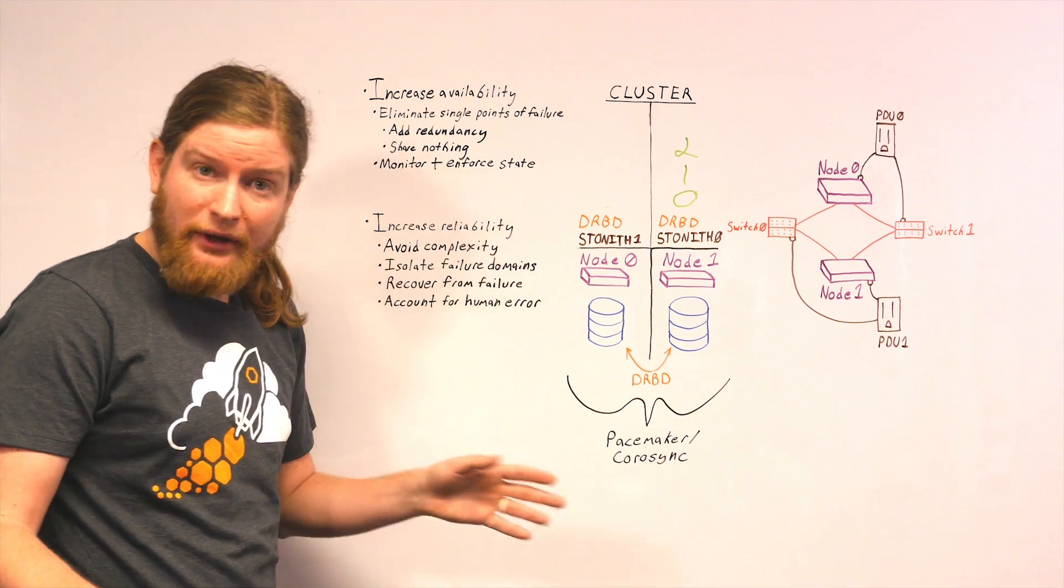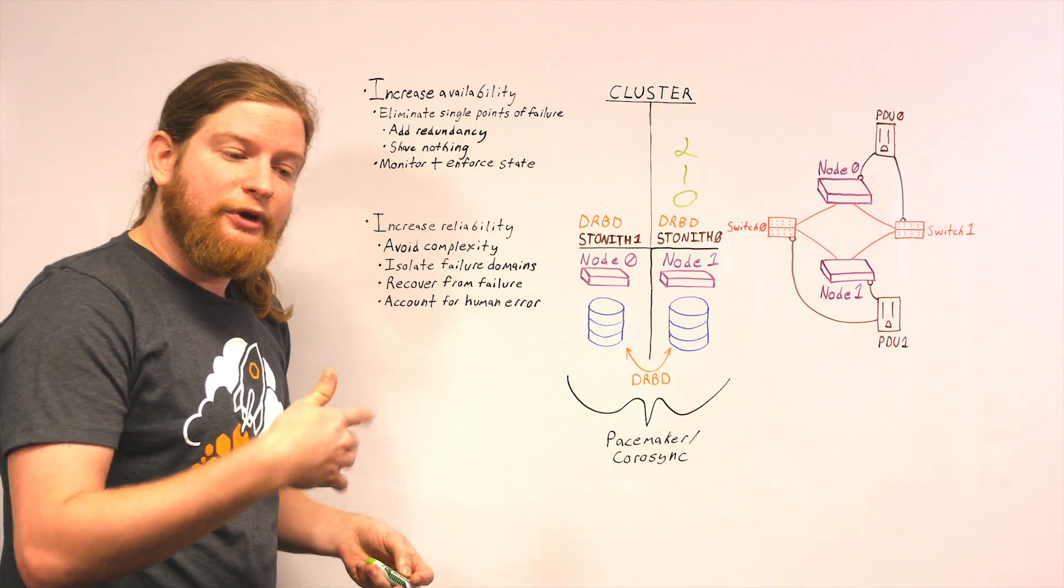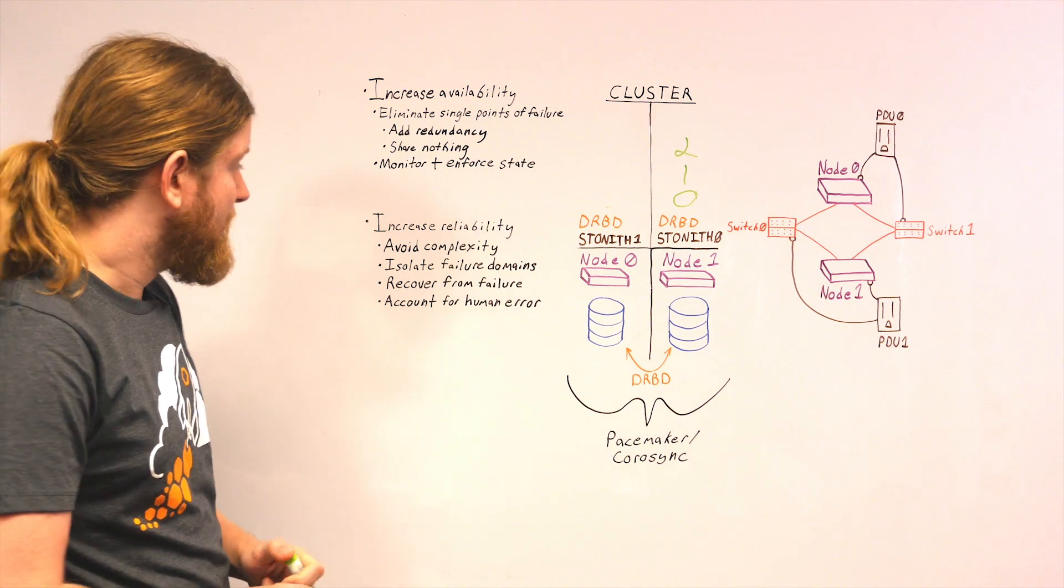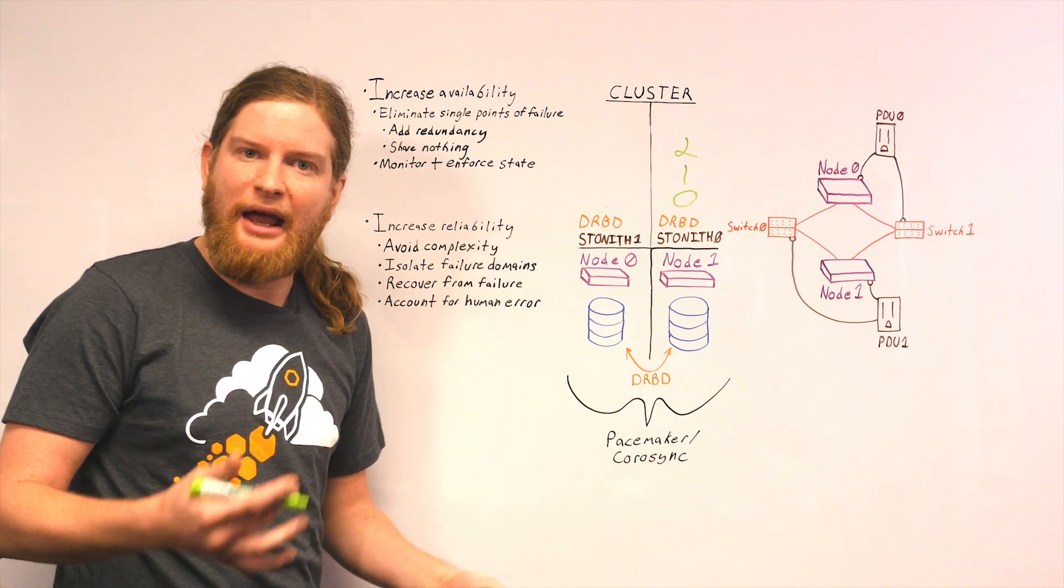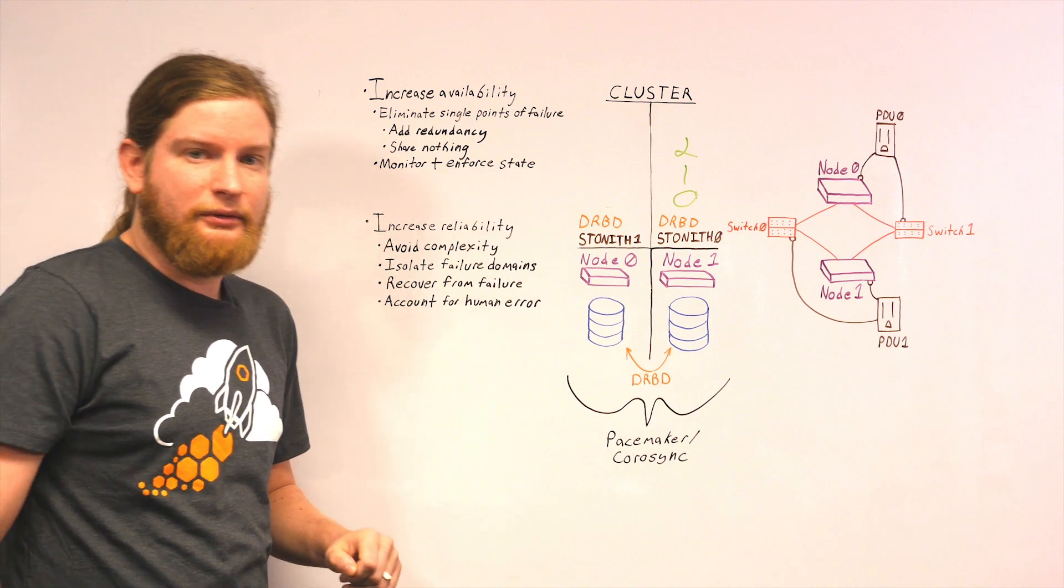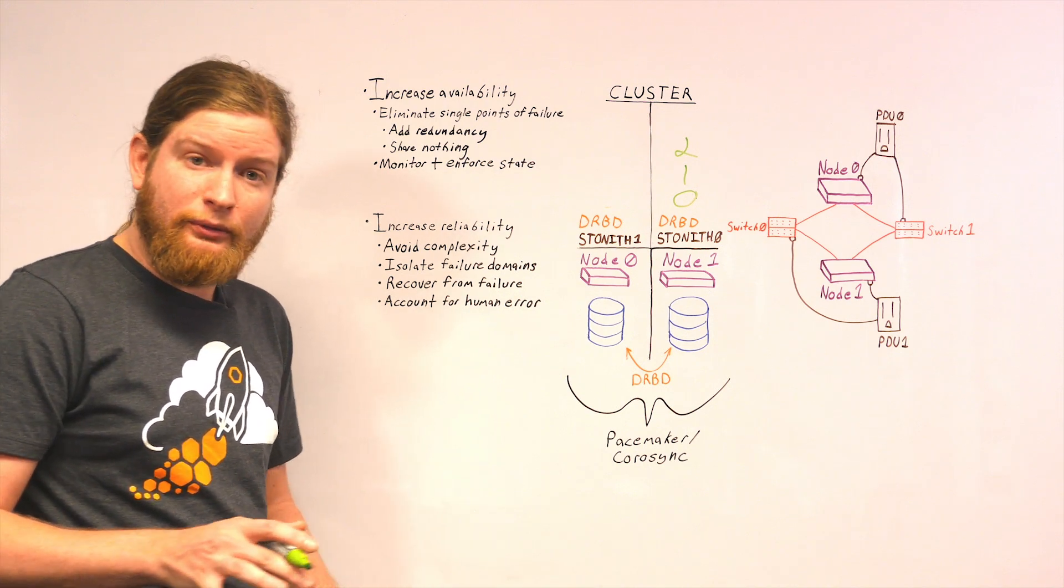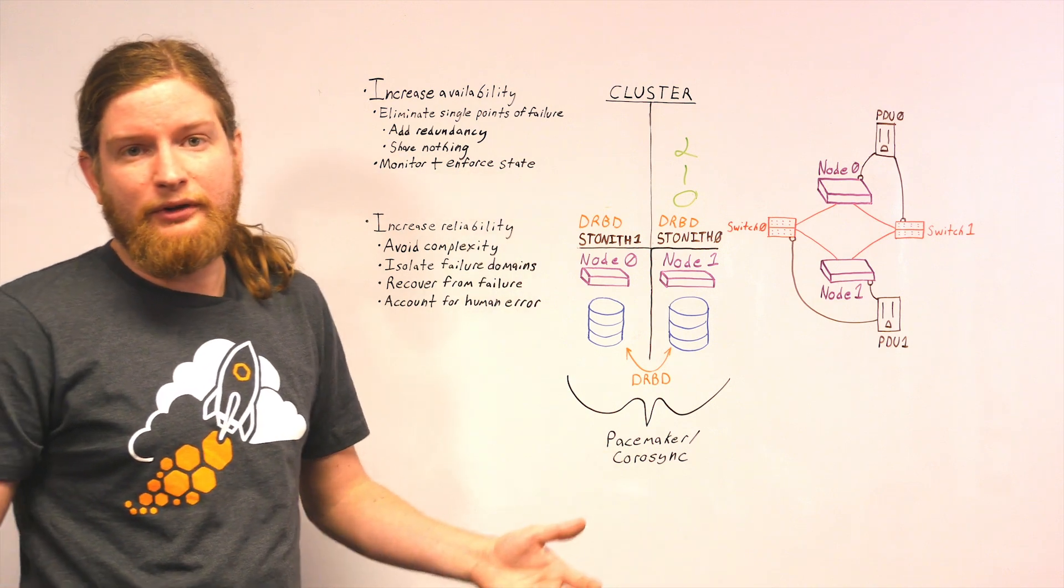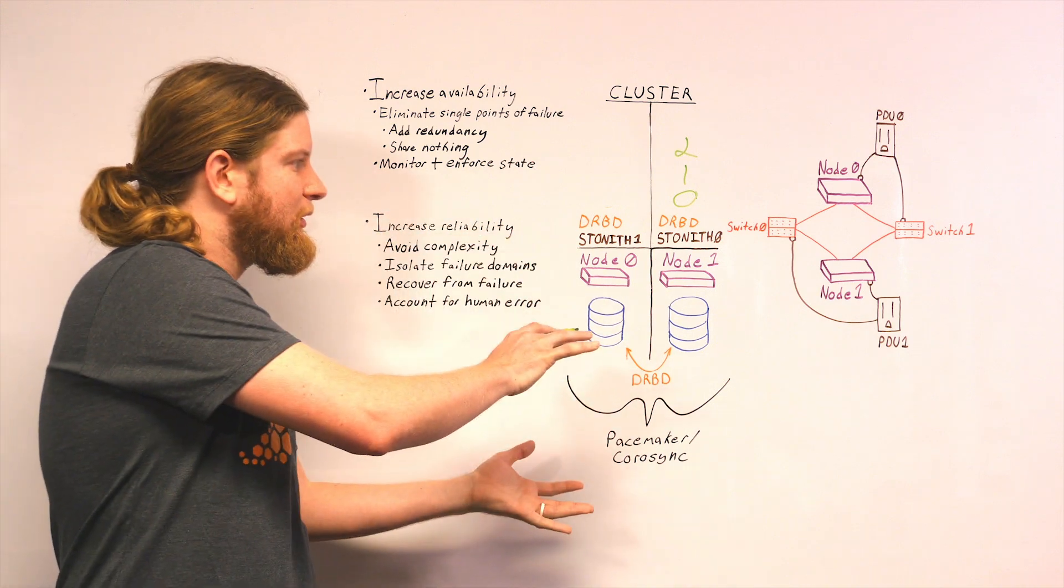We want to avoid complexity. In general, a simpler cluster is going to be a more reliable cluster. Reducing the number of components reduces the number of components that can fail. We should generally strive to reduce complexity wherever we possibly can. We should isolate failure domains. We don't want to necessarily depend on the cluster itself to account for every single failure. What if one disk in node zero goes down? We don't necessarily want node zero to die just because one disk went down. We should still have defense in depth. We might still use RAID controllers, redundant power. We're isolating failure domains, deciding what components can fail and what can't.